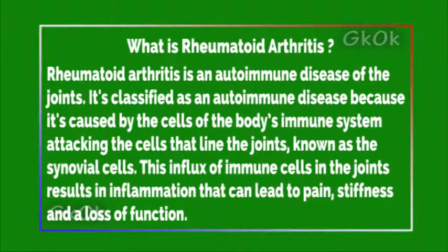What is rheumatoid arthritis? Rheumatoid arthritis is an autoimmune disease of the joints. It is classified as an autoimmune disease because it is caused by the cells of the body's immune system attacking the cells that line the joints, known as the synovial cells. This influx of immune cells in the joints results in inflammation that leads to pain, stiffness, and a loss of function.